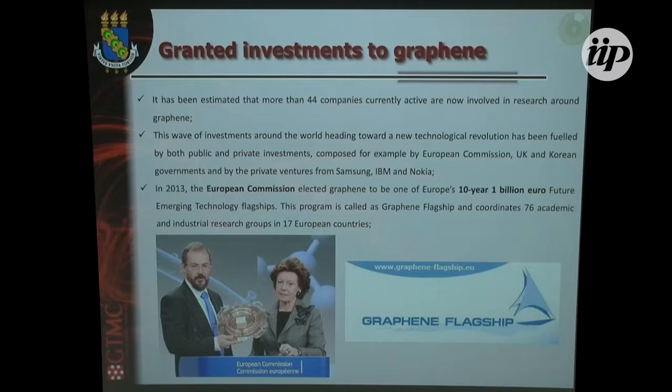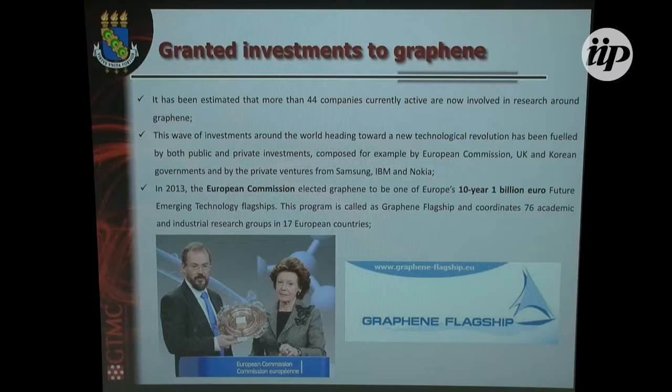Beyond the papers and patents, another amount emphasizing how important this is for the scientific community is when it involves money. The European Commission invests in the graphene flagship program around 1 billion euros over 10 years. Many companies and public and private universities are studying and developing research in this area, opened with the isolation of graphene in 2004.